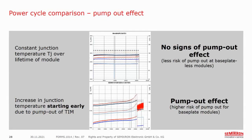The load cycle charts reflect the aging process as a rise in chip temperature based on the number of load cycles. The typical aging process can be inferred from the shape of the increase. If there is a continuous increase from the start of the test, this indicates that the TIM is being pumped out. Base plate modules are more often affected than baseless modules. If the chip temperature remains on a stable level, it indicates much less degradation of the TIM material.